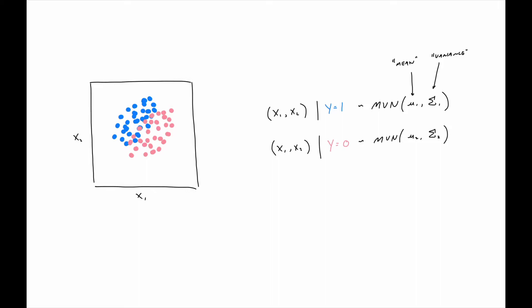I'm using one for blue and zero for pink, and then feature variables x1 and x2. And so something we could do is assume that, okay, conditioned on y equals one, so we're only talking about the blue points, we're going to assume that x1, x2 follows a multivariate normal distribution. We're not going to go into the details of multivariate normal. Hopefully, you've seen that somewhere else.